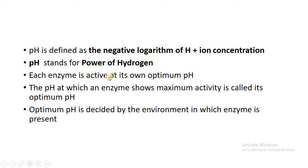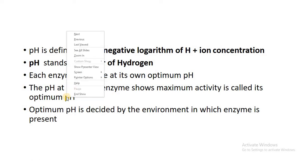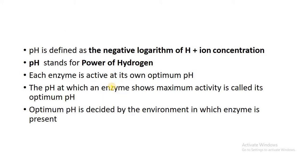Each enzyme is active at its own optimum pH. The pH at which an enzyme shows the maximum activity is called the optimum pH, and this optimum pH is decided by the environment in which the enzyme is present. So remember, each enzyme has its own optimum pH.